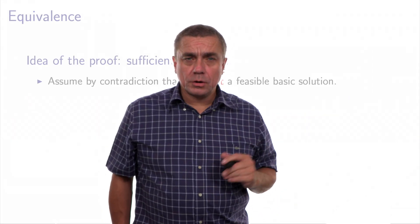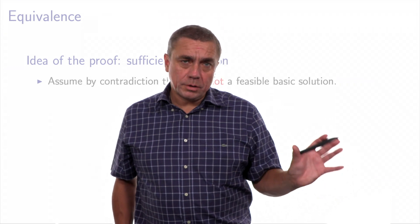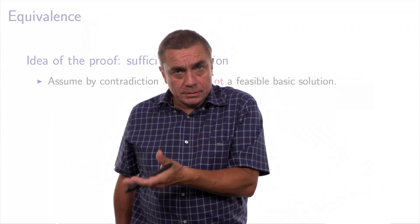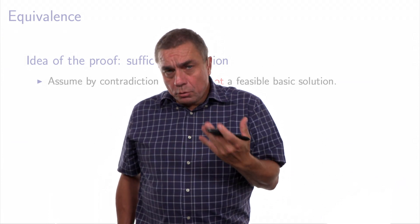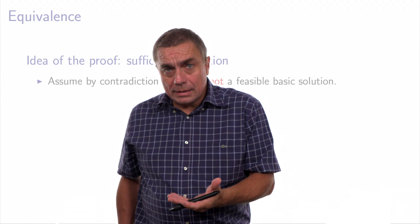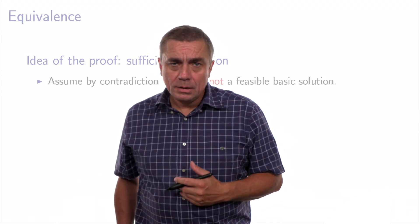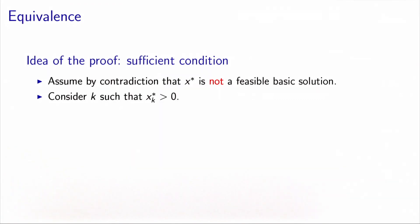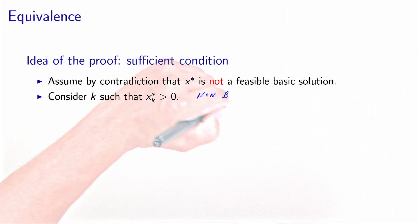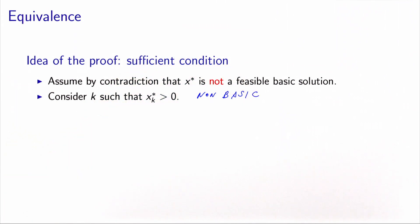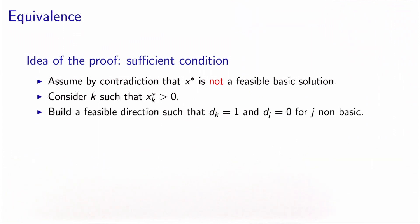We start with the sufficient condition. We assume that x* is a vertex of the polyhedron and we will prove that it is also a feasible basic solution. This proof works by contradiction. Let's assume that x* is not a feasible basic solution. The idea is to consider an index k which is non-basic such that x*_k is strictly positive — because if it's not a feasible solution, one of the non-basic variables will be strictly positive.